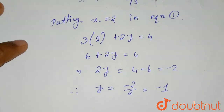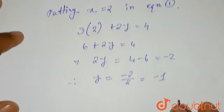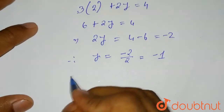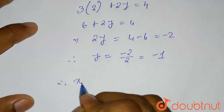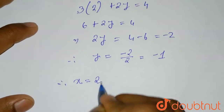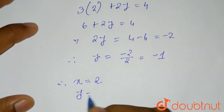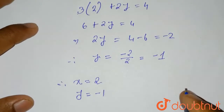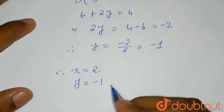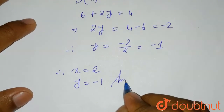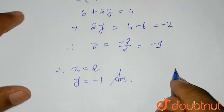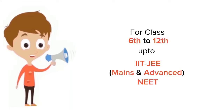So the value of y is -1 and x is 2. Therefore x = 2 and y = -1. This is the required solution of the question.